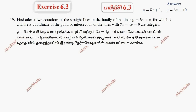Hi students, this is Alex here. Exercise 6.3, question number 19: Find at least 2 equations of the straight lines in the family of lines y = 5x + b, for which b and the x-coordinate of the point of intersection with this line are integers.